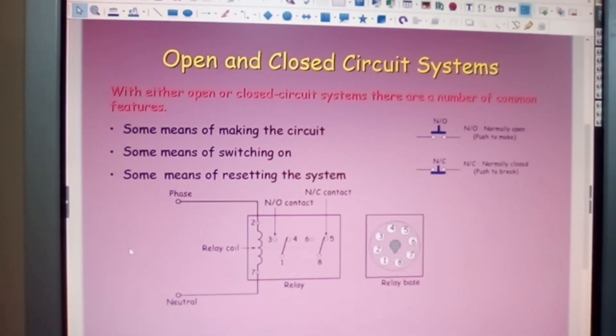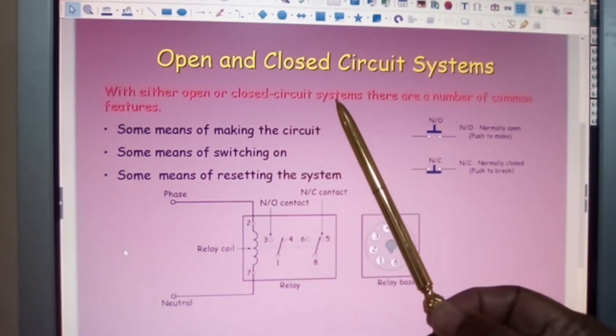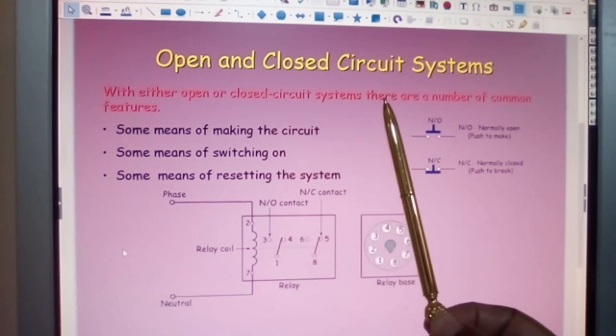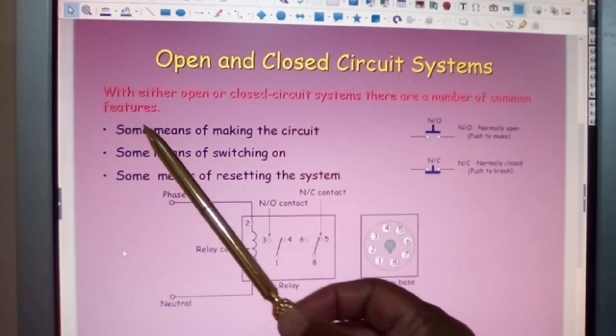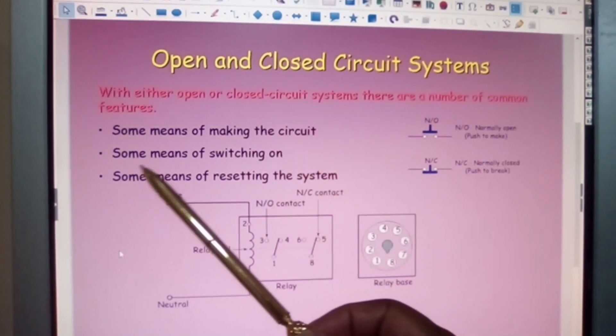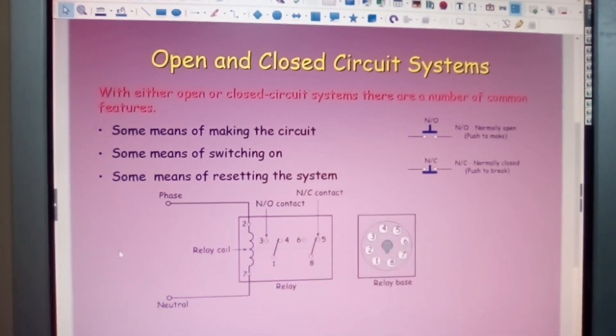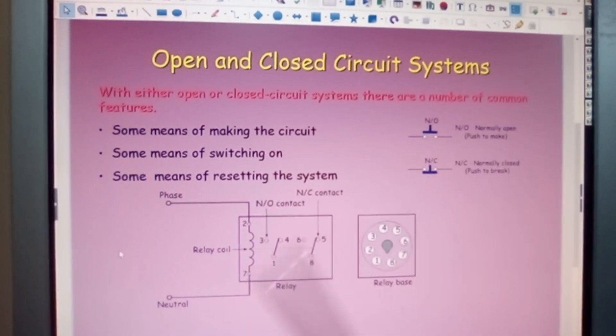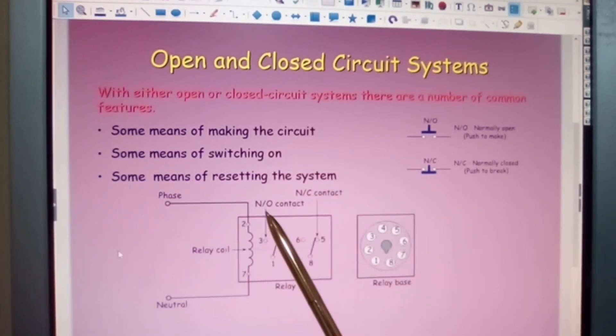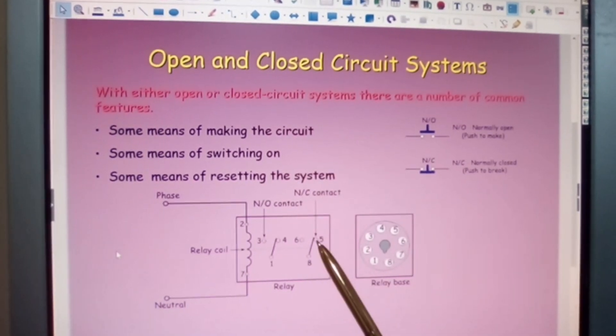Open or closed circuit systems. With either open or closed circuit systems, there are a number of common features. Some means of making the circuit. Some means of switching on. Some means of resetting the circuit system. And all this is showing you here is that these contacts are normally open. And then it's showing you normally closed contacts.